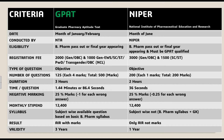Both GPAT and NIPER have negative marking, that is 25%. In GPAT, every wrong answer, minus 1 mark will be reduced. In NIPER, every wrong answer, minus 0.25 marks will be reduced. You will get 12,400 rupees as a stipend in both GPAT and NIPER.